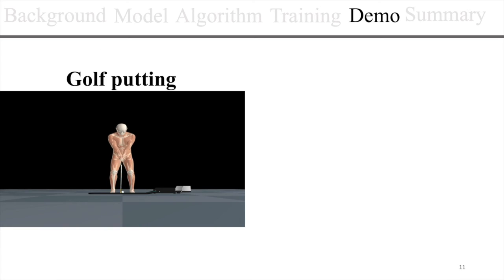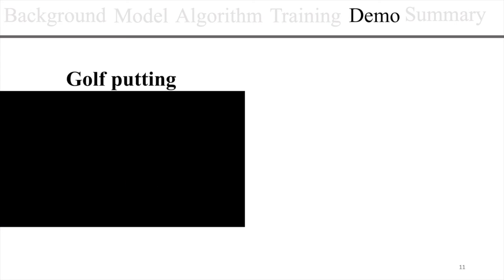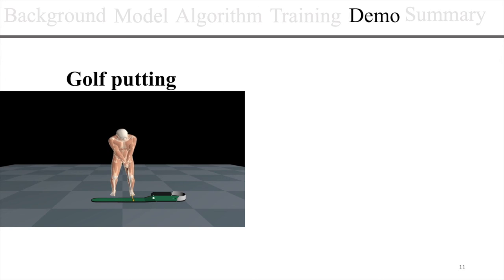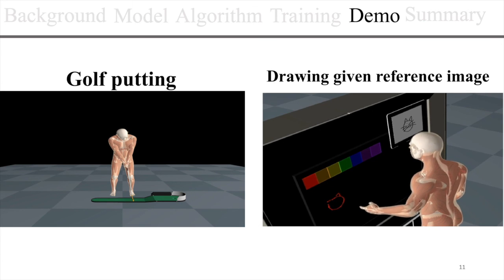The virtual human is able to adjust the putter swing and sink the ball into the hole. It can also mimic to draw given a reference image.